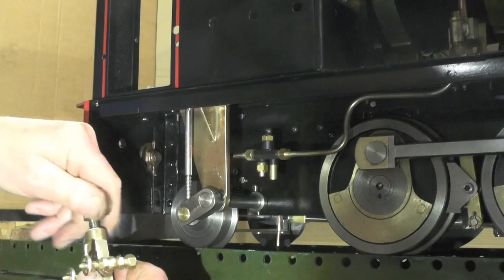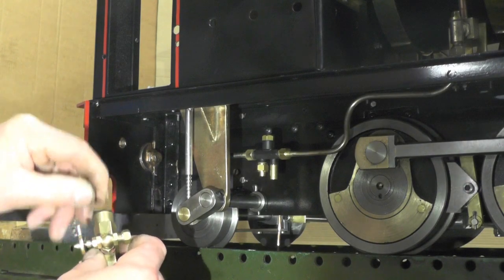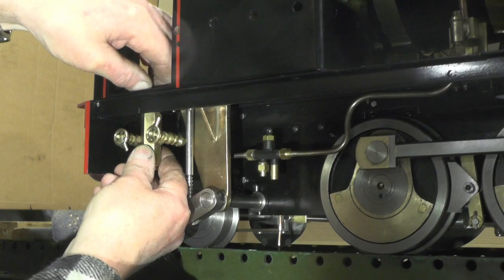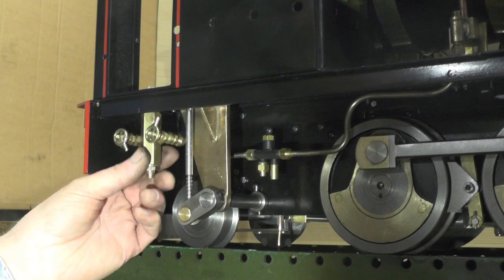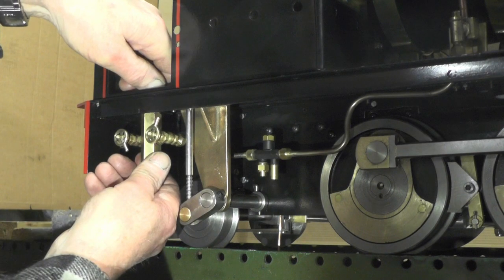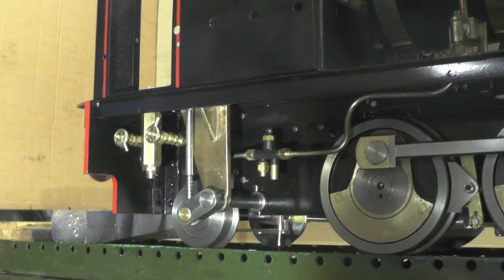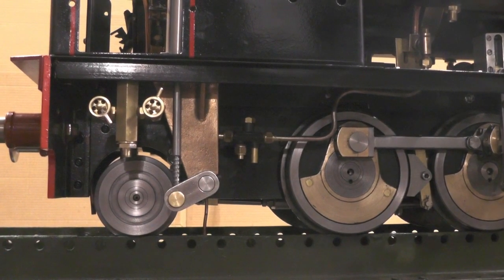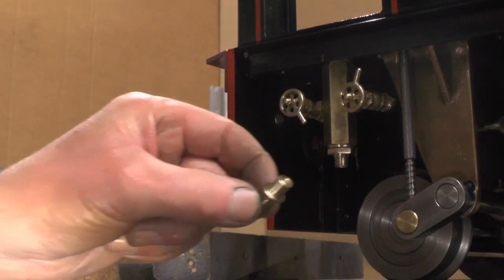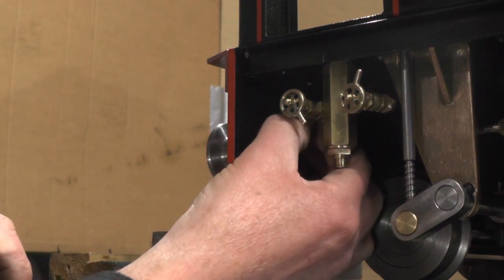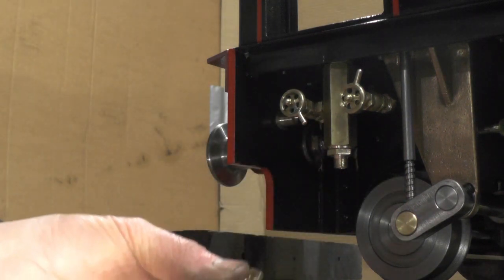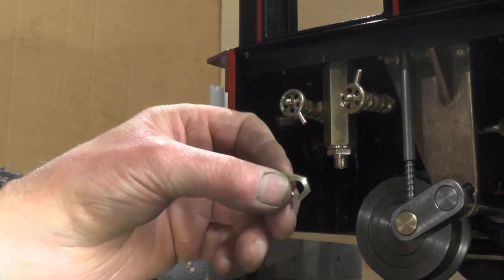Right, the manifold is going to fit up to the cab floor now. And I've got this union which is going to go through the buffer plate and it's going to screw on to the other side with the locking nut.